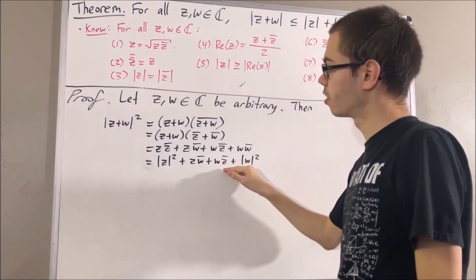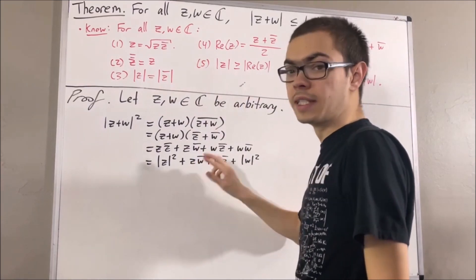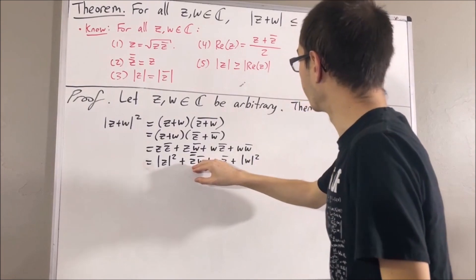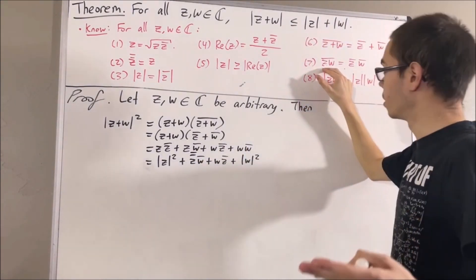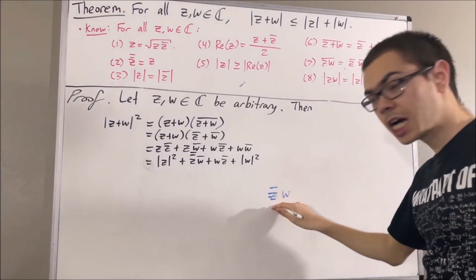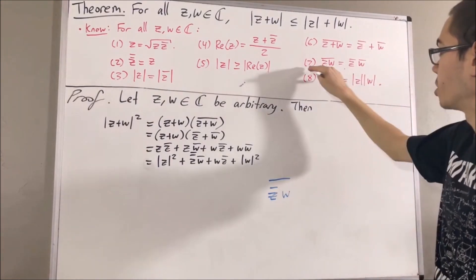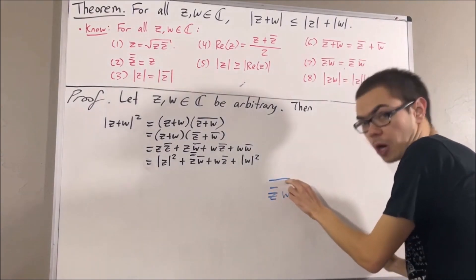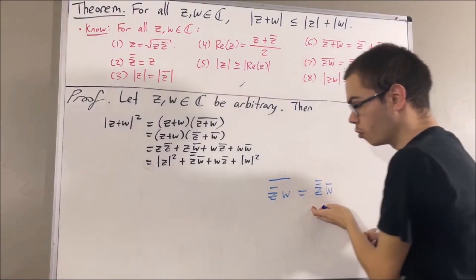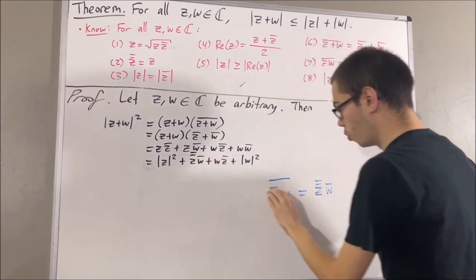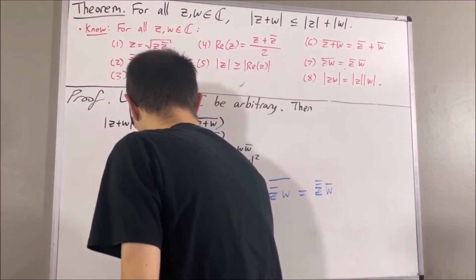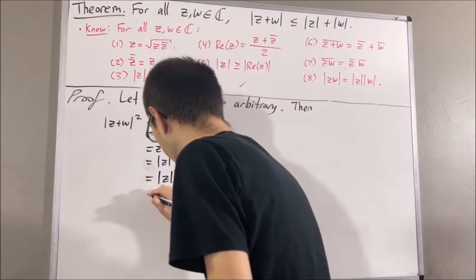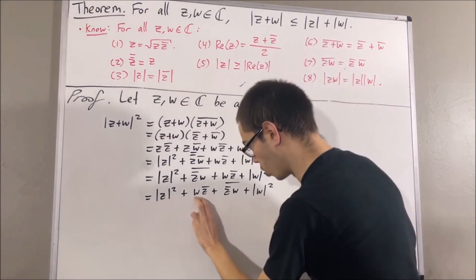Now, what can we do about the middle terms? By result 2, z = z̄̄ (the conjugate of the conjugate of z). We're going to apply result 7 to the term z·w̄, taking z to be z̄ and w to be w. The conjugate of z̄·w splits by result 7 as z̄̄·w̄, so we can replace z̄̄·w̄ with the conjugate of z̄w. Swapping the terms around, we have z̄w plus the conjugate of z̄w.